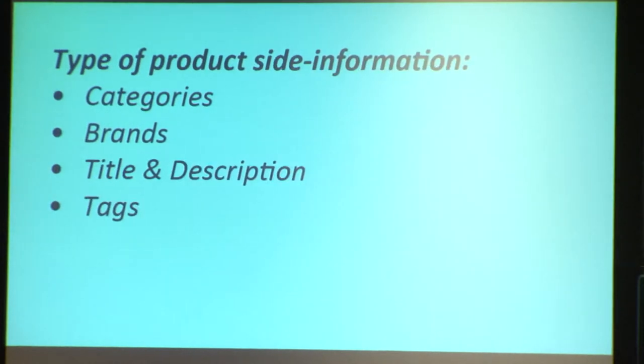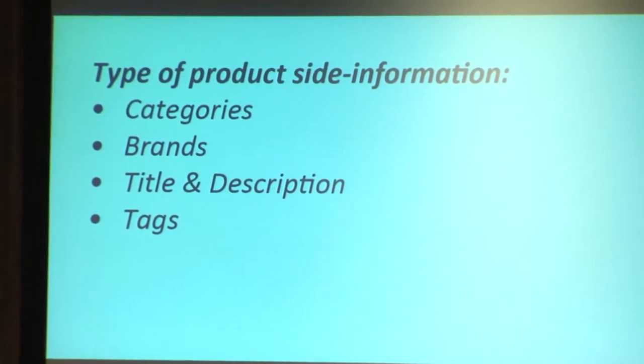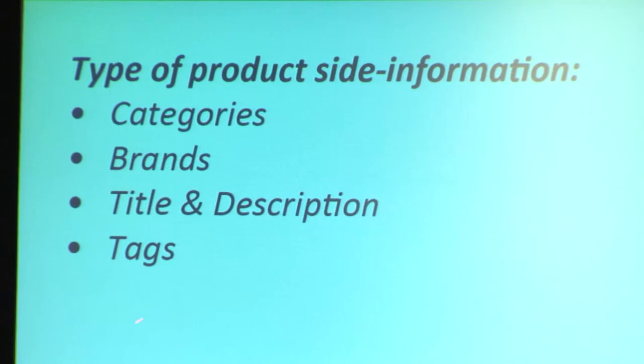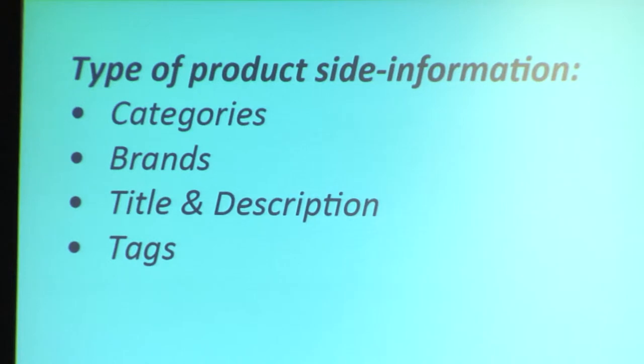The type of product side information we use is mostly discrete features — things like categories, brands, title, description, tags. Most of these things will have more generalization power than the product ID, because most properties of a product appear over multiple products, so they'll have better support in the data.